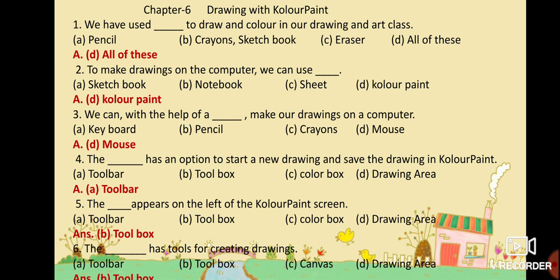MCQ No. 5: The dash appears on the left of the Color Paint screen. Option A: Toolbar. Option B: Toolbox. Option C: Color Box. Option D: Drawing Area. Your answer is Option B: Toolbox. The toolbox appears on the left of the Color Paint screen.